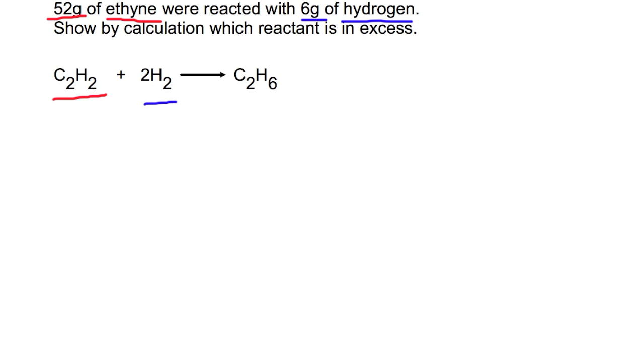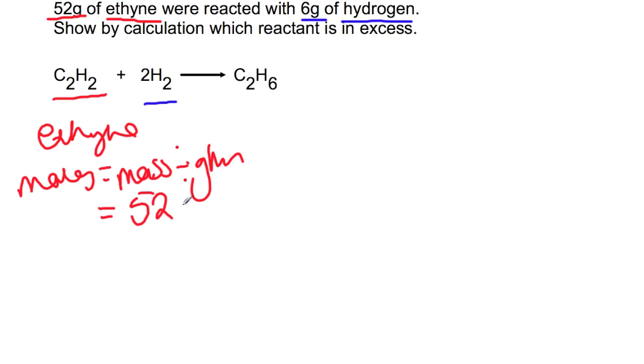And you just follow the same steps. So for ethyne, moles will equal mass divided by gram formula mass. So we have 52 grams. The GFM of ethyne is 26. So you find that we have 2 moles of ethyne present.